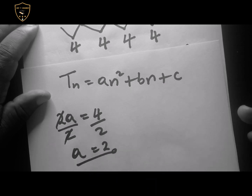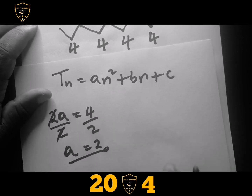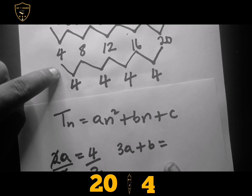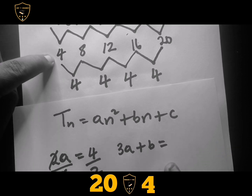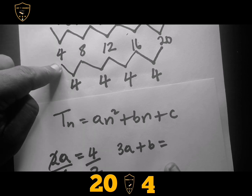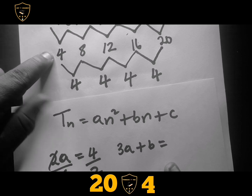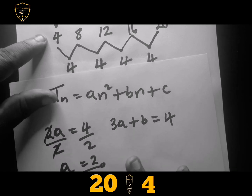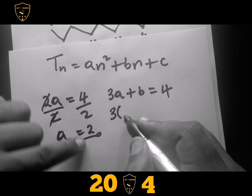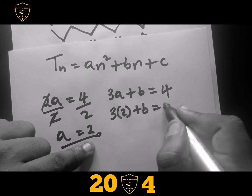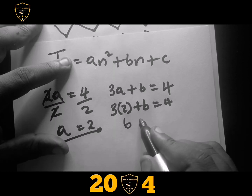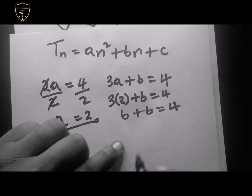Now we need the value of b. We have 3a plus b equals the first term of the second row — the first difference row. I said for b we use the first term of that row, which is 4 in this case. We know the value of a is 2, so we substitute: 3 times 2 plus b equals 4, which gives us 6 plus b equals 4.